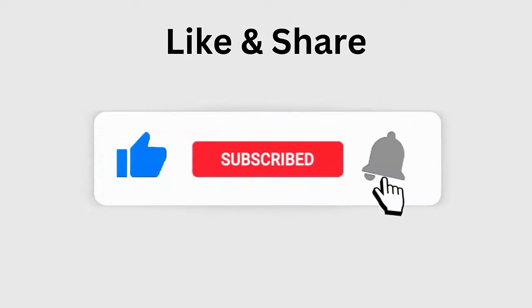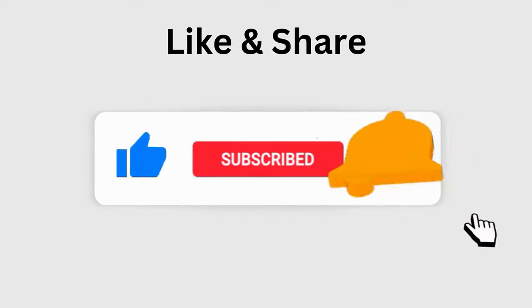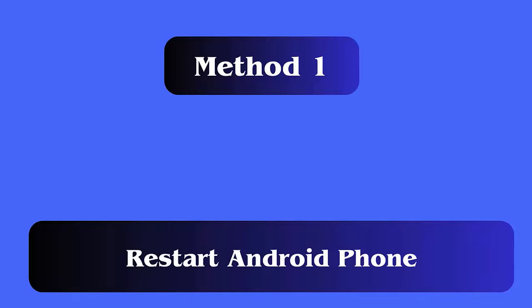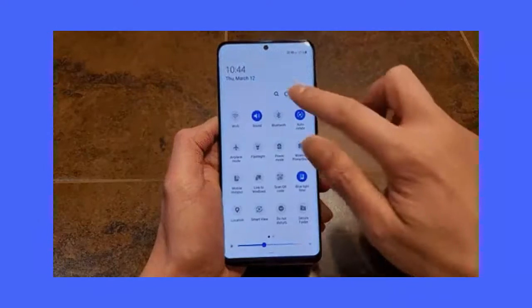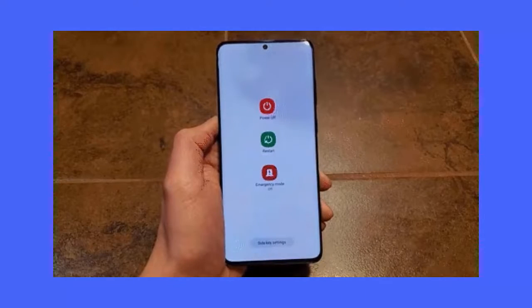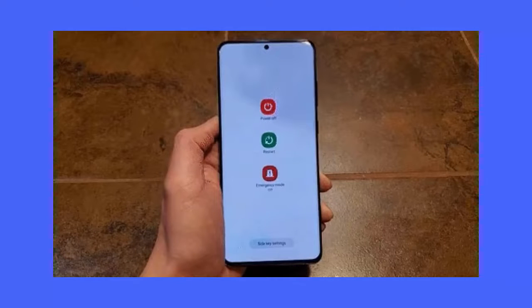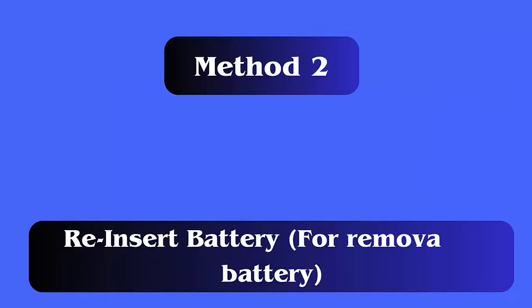Method 1: Restart Android phone. If your Android or Samsung phone is showing a blue screen of death issue, you can force reboot your device. This is an easy way to get rid of the blue screen error on Android. If restart does not work, move to the next method.